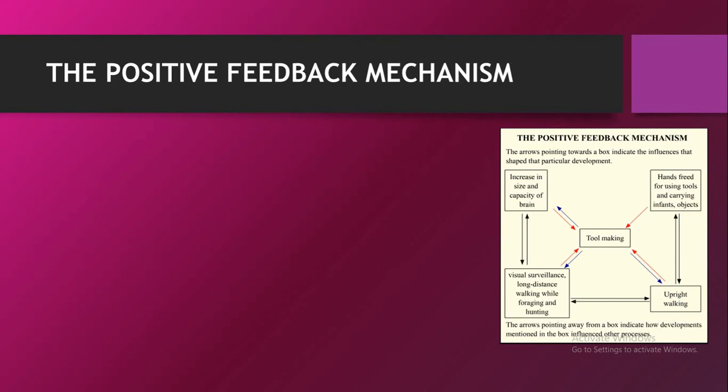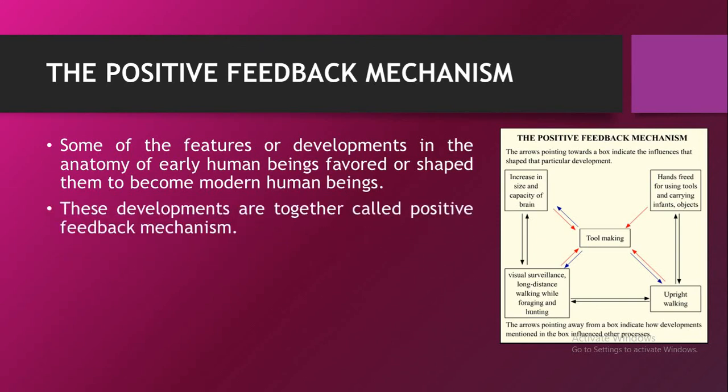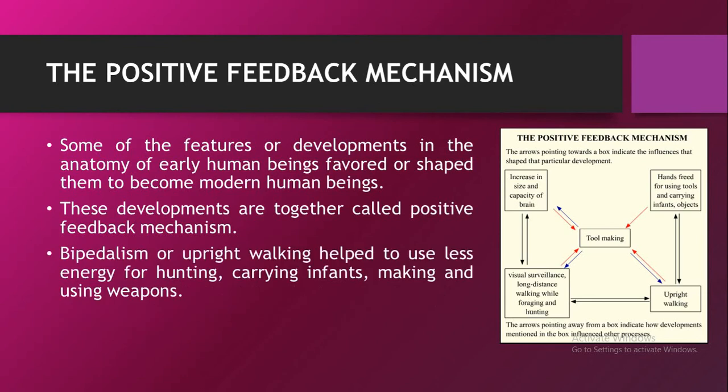The positive feedback mechanism: some of the features or developments in the anatomy of early human beings favoured or shaped them to become modern humans. These developments are together called positive feedback mechanisms. Bipedalism, or upright walking, helped to use less energy for hunting, carrying infants, and making and using weapons.